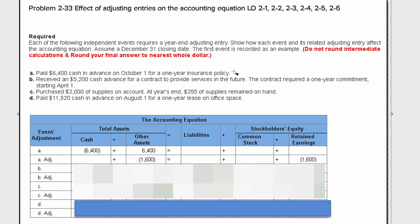Here's the first one. To the left of my mouse here, you can see it moving. They paid $6,400 cash in advance on October 1st for a one-year insurance policy. So they had $6,400, cash decreased, and other assets increased.